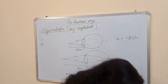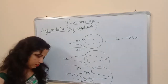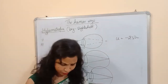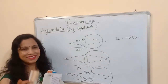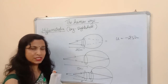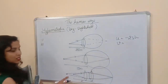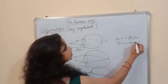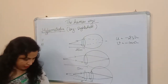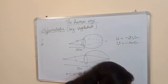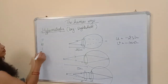Here is a question on hypermetropia. The near point of a hypermetropic person is one meter, meaning the person can clearly see an object placed at one meter but not closer. So the image should be formed at one meter — v = −100 cm. The person wants to read a book placed at 25 cm, so u = −25 cm. We apply the lens formula: 1/f = 1/v − 1/u.